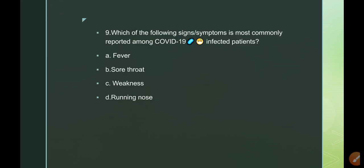Question 9: Which sign or symptom is most commonly reported among COVID-19 infected patients? A. Fever; B. Sore throat; C. Weakness; D. Running nose. All four can be symptoms of COVID-19 patients, but the most commonly reported symptom or clinical manifestation is fever. The answer is A — fever is the most common symptom among COVID-19 patients.